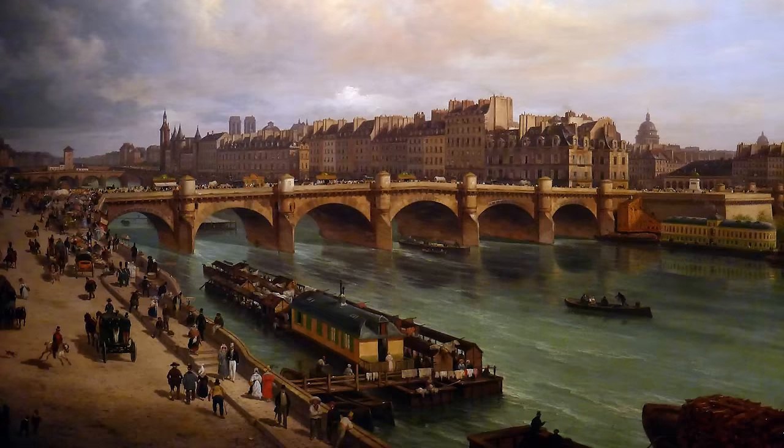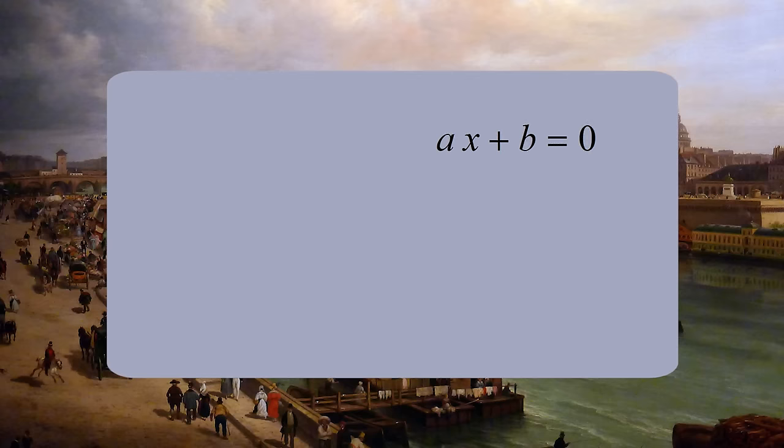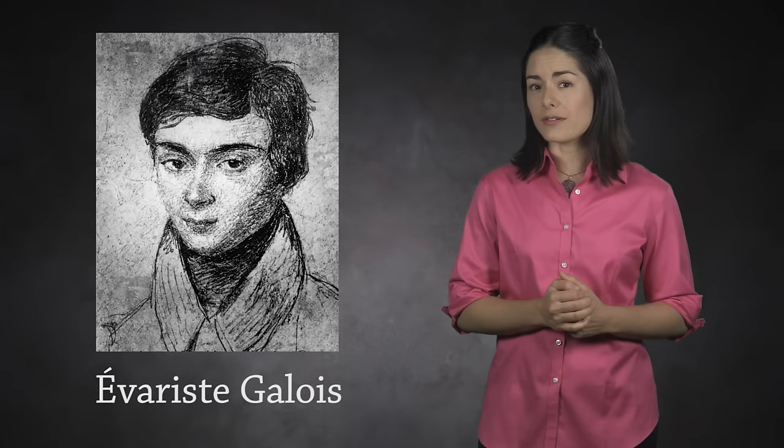The year is 1800, and for some time now, people have known how to solve linear equations, quadratic equations, cubic equations, and even quartic equations. But what about equations of higher degree — degrees 5, 6, 7, and beyond? A young teenager named Évariste Galois answered this question, and to do so, he used a tool that he called a group.